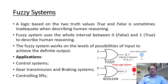Moving to the last concept, which is fuzzy systems. A logic based on two truth values — true and false — is sometimes inadequate when describing human reasoning. Fuzzy systems use the whole interval between 0 and 1 to describe human reasoning. As a result, fuzzy systems are being applied in rule-based automatic controllers. The fuzzy systems work on levels of possibilities of input to achieve definite output. Fuzzy systems find their applications in control systems, geared transmission and braking systems, and controlling lifts.